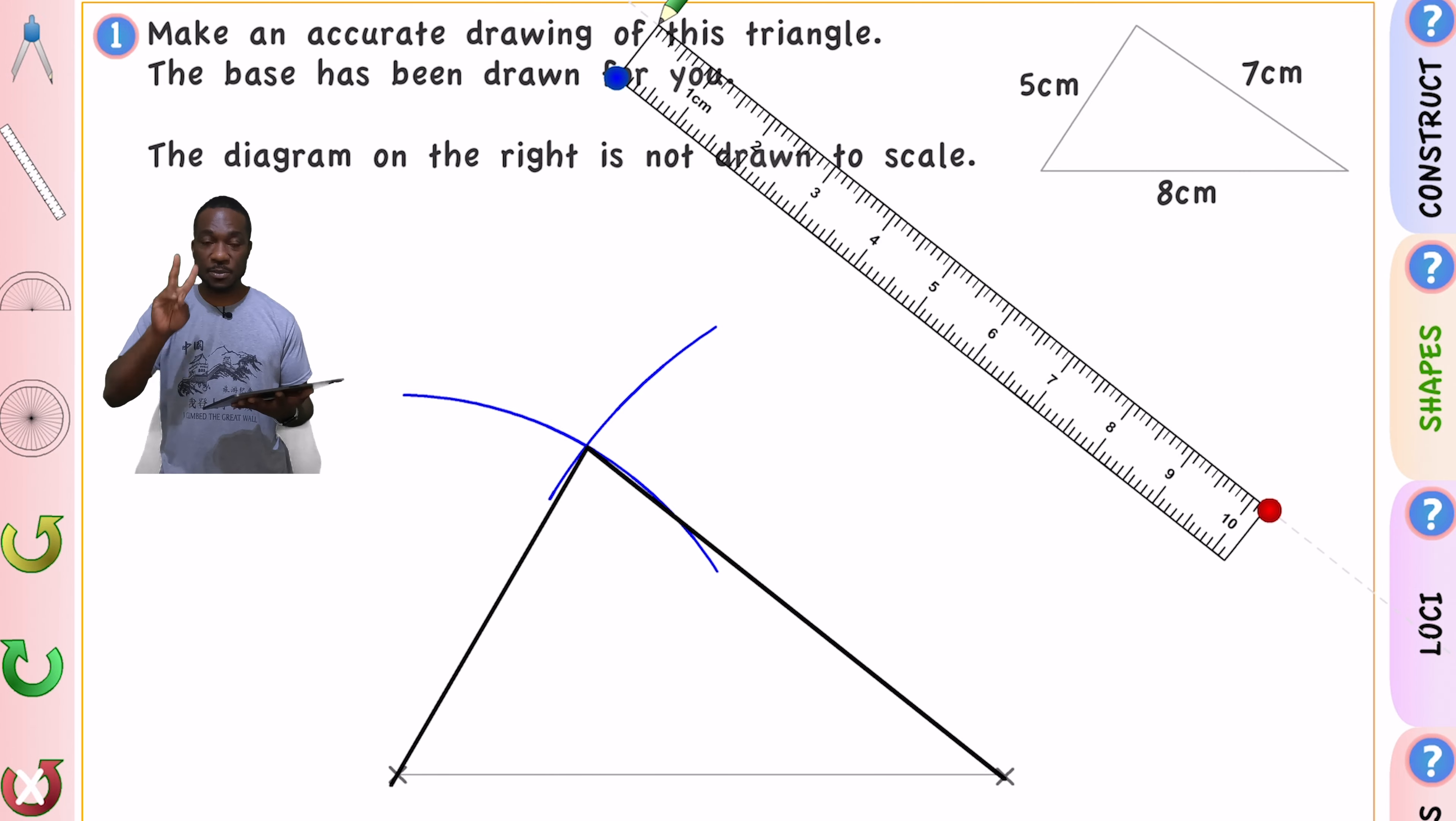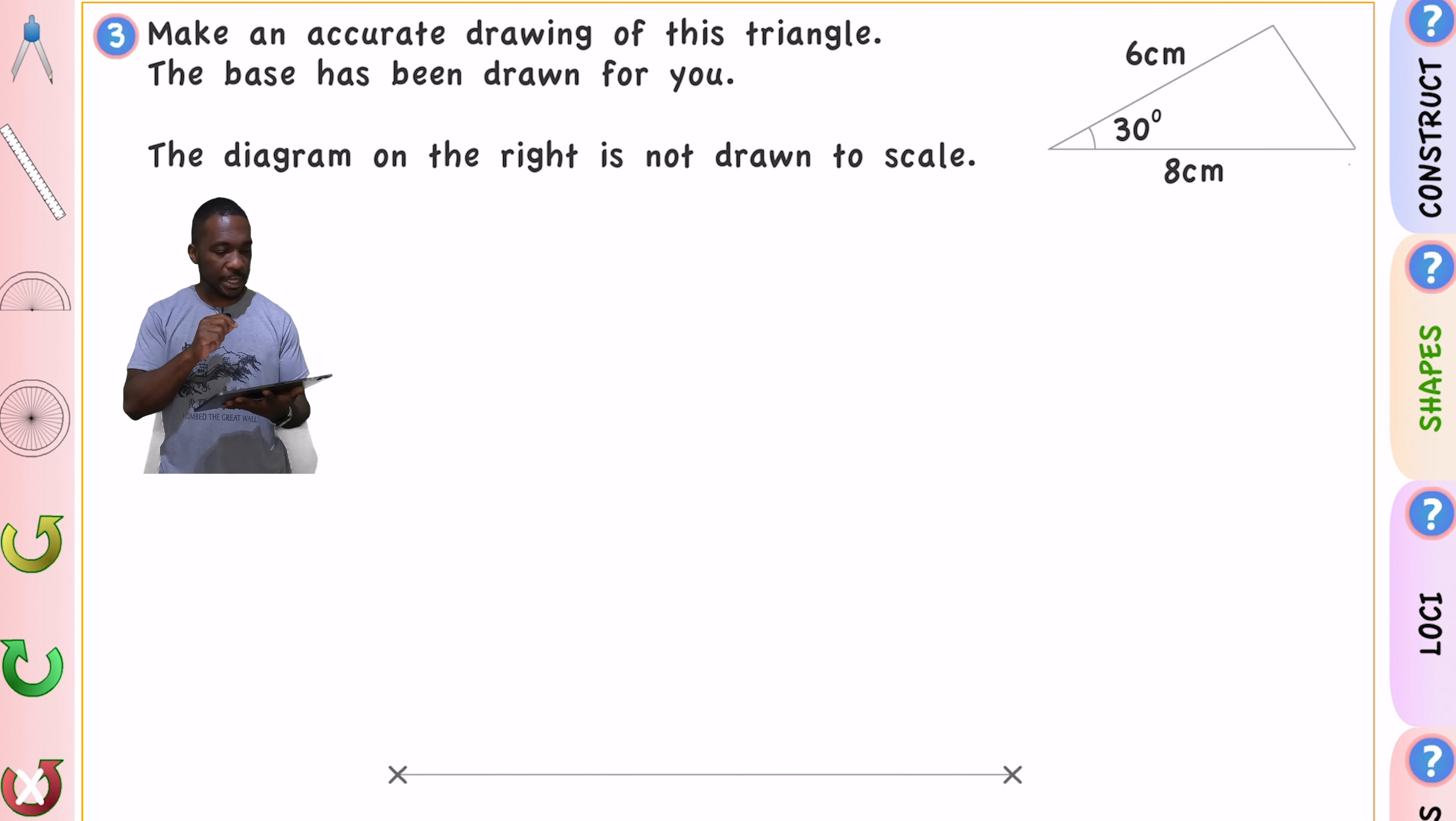So on the second one we've been given two known sides and an angle. So this is where we're going to need our protractor. Let's have a look and see. Make an accurate drawing of this shape. The base has been drawn for you. The diagram is not drawn to scale on the right. So they've given us the base. So they've given us that eight centimeters.